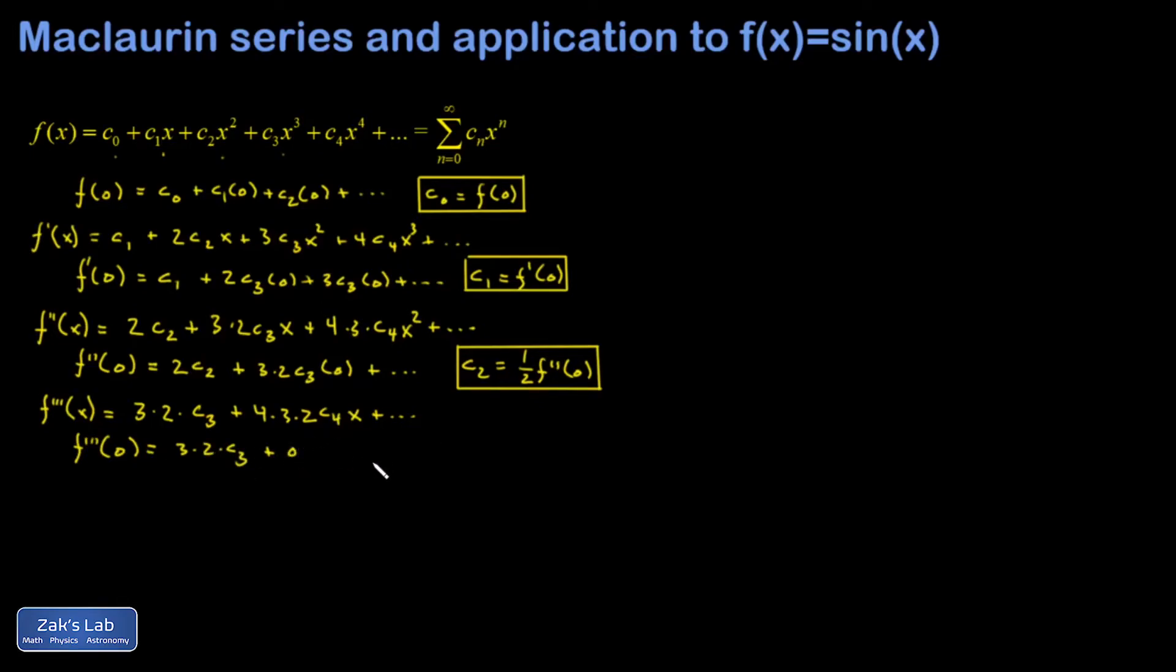So I'll just write it as a 0 this time. And this time, I have c3 is equal to 1 over 3 times 2 f triple prime of 0.